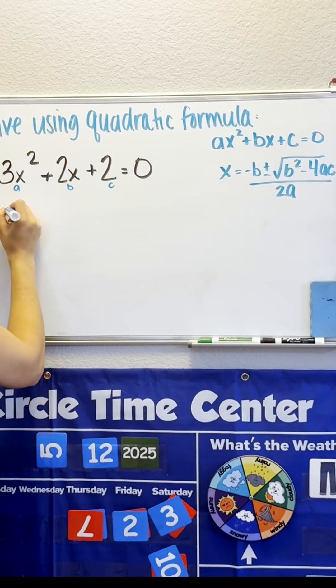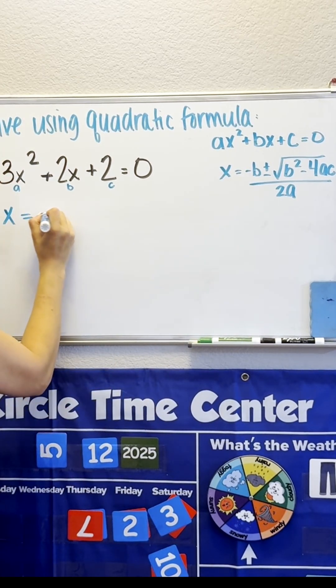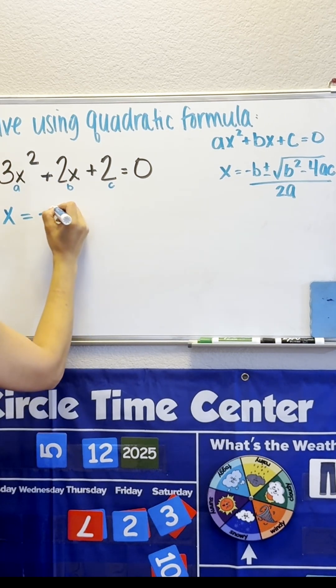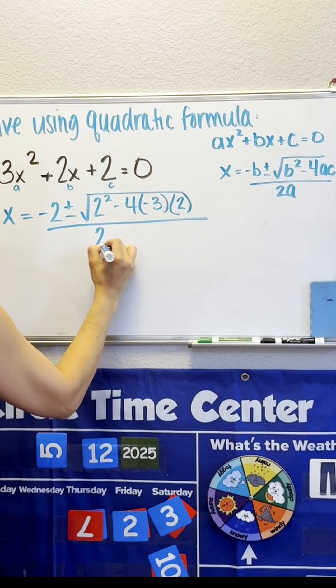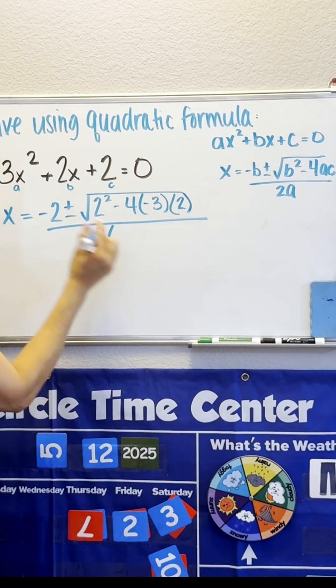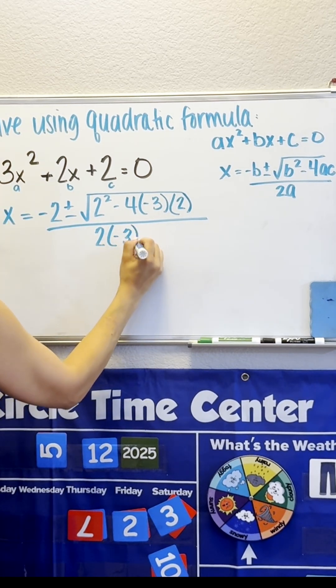So we have X equals negative B, so negative 2, plus or minus... 2 times A, which is our negative 3.